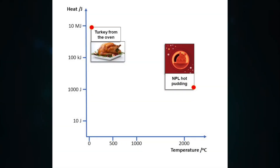We can have fun plotting objects on a temperature versus heat graph. A cooked turkey just before serving is colder than the pudding, but it has much more heat because it's so much bigger and has a higher specific heat capacity. It's also much tastier.